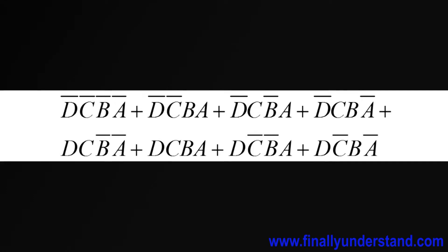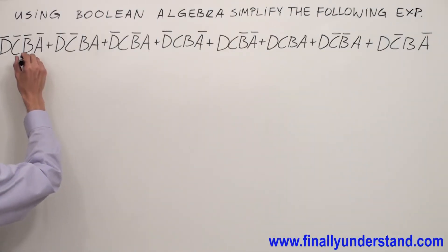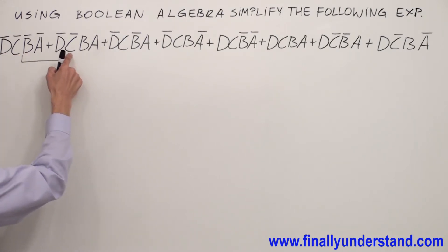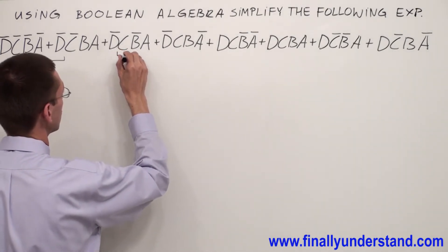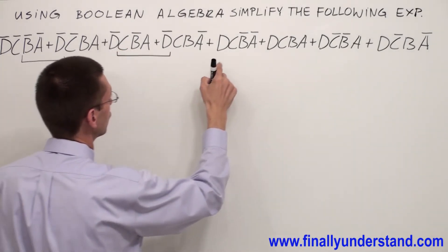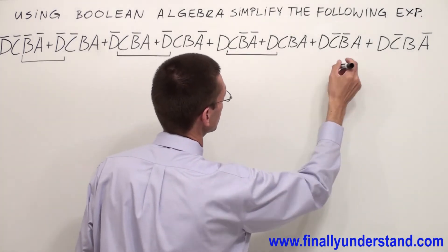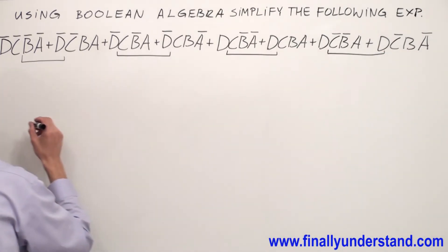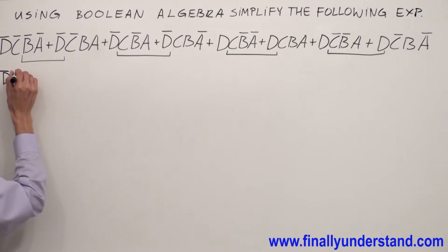Let's take a look at this example. From these two terms I can factorize D̄C̄, from these two terms I can factorize D̄C, from these two terms I can factorize DC, and from these two terms I can factorize DC̄. So let me rewrite the problem.